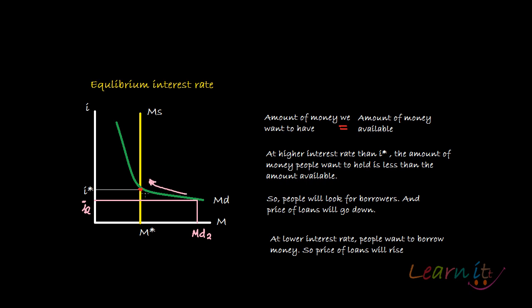So to summarize: the intersection of the money supply curve and the demand curve for money determines the equilibrium interest rate and the equilibrium amount of money demanded, which equals the amount available in the society. We have also looked at positions of disequilibrium and how the economy converges back towards the equilibrium position from those positions.